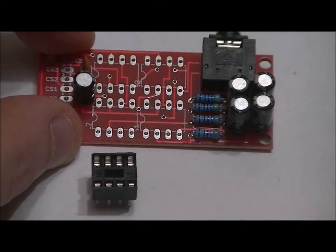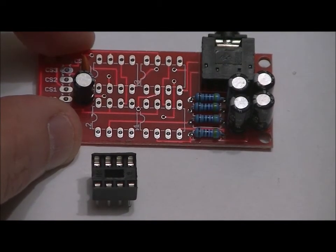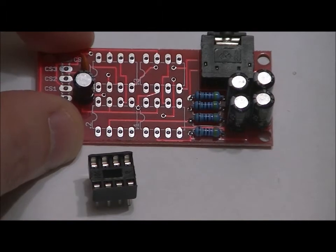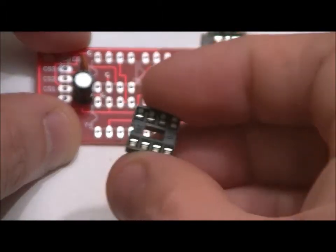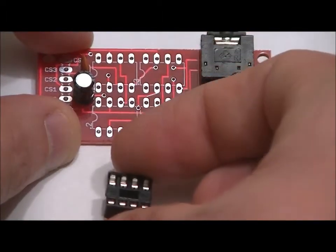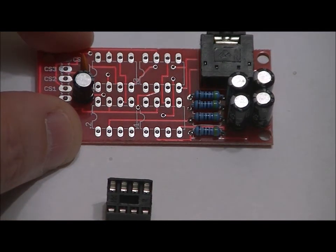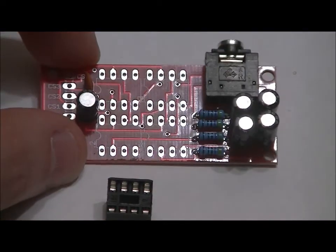You might notice on the left side of the socket silk screen, there's a little notch. See what I mean? A little notch right there on all four of them. There's a little notch on the actual sockets themselves. Make sure that you place each of the four sockets flush to the board with the notch facing the left from this perspective. And that's going to help us to determine which way to place our chips.